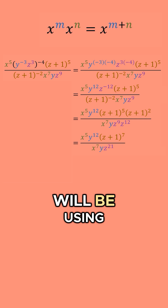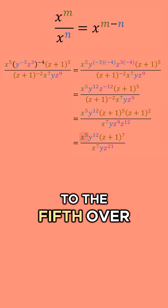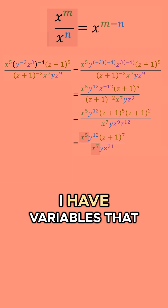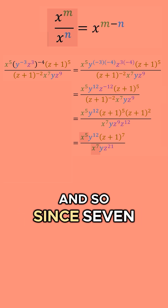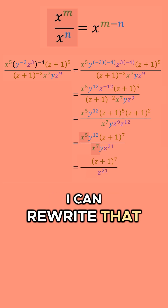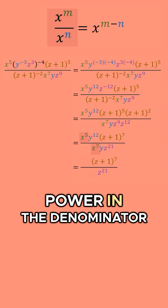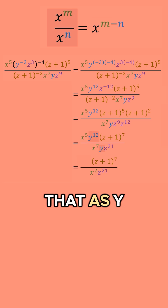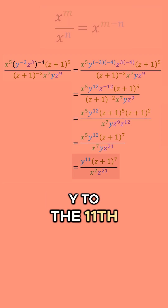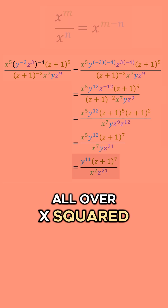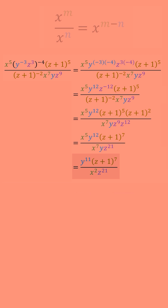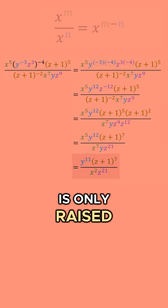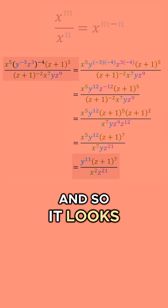Our last step is using the quotient rule. I have x to the fifth over x to the seventh — since seven is larger than five, I rewrite that as x to the seven minus five in the denominator, which is x squared. I also have y to the twelfth over y to the one — twelve is larger, so I rewrite that as y to the twelve minus one in the numerator, giving y to the eleventh power. Our final answer is y to the eleventh times z plus one to the seventh, all over x squared times z to the twenty-first, with no negative powers and each base appearing only once.